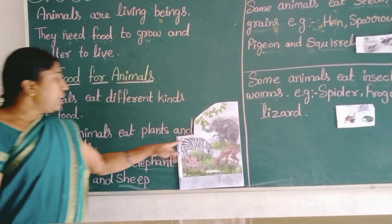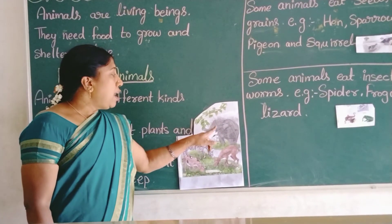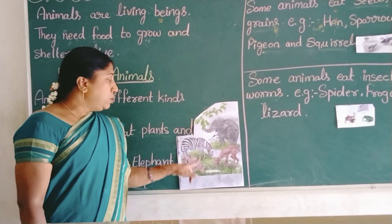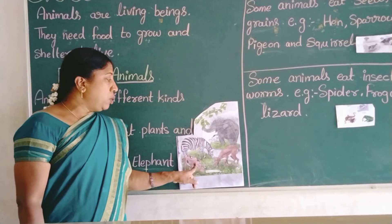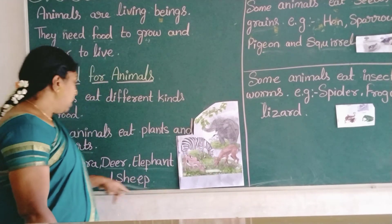See children, look at this picture. Elephant, cow, zebra, goat, bee and sheep.